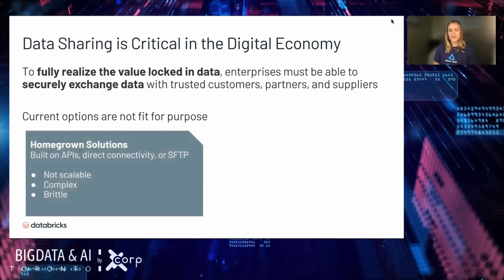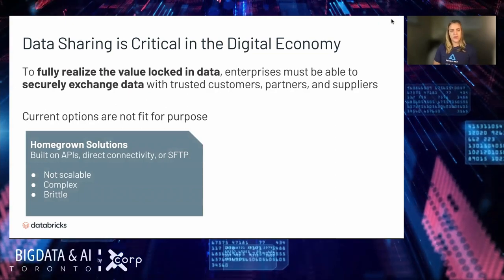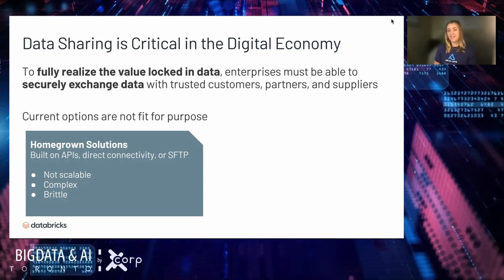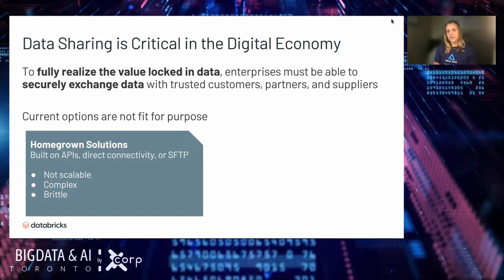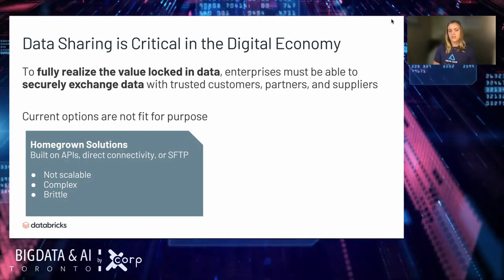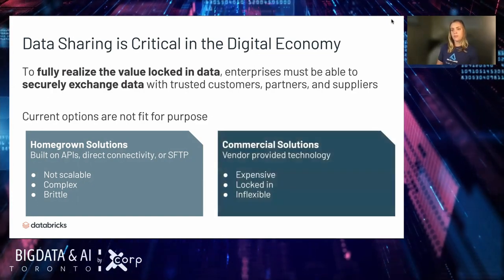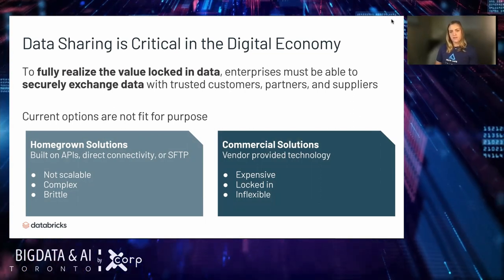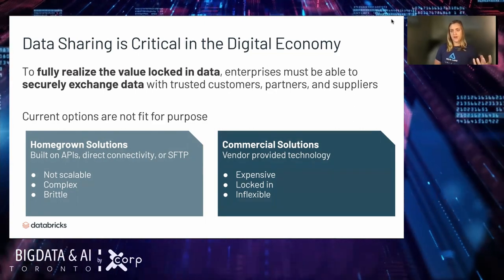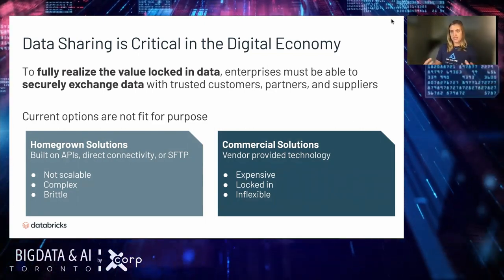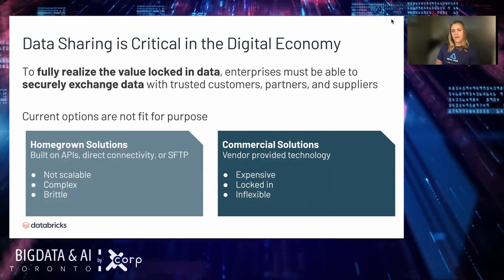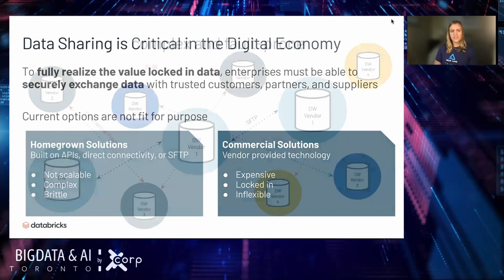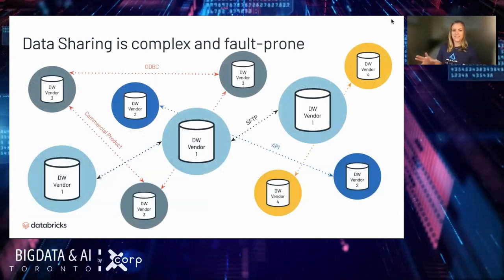In order to actually share data, there are two common methods currently. First, homegrown solutions — think APIs, SFTP, ODBC or JDBC open connections — which can pose scalability issues and can be complex to manage, with additional overhead in general. On the other side, we have commercial solutions. These might be a leg up on homegrown solutions, but they can be expensive, they can lock you in, meaning both the data provider and recipient may need to be using the exact same tech underneath the hood.